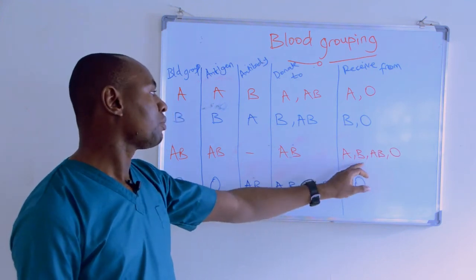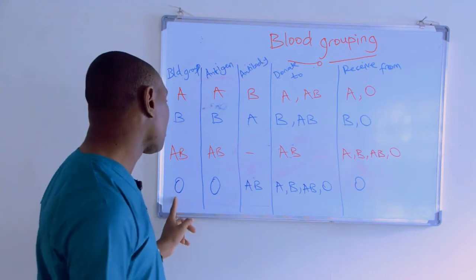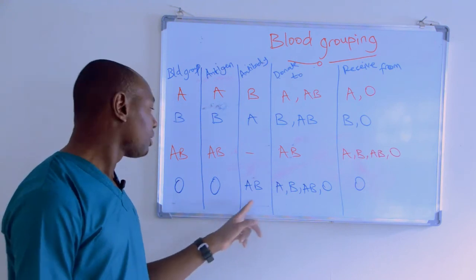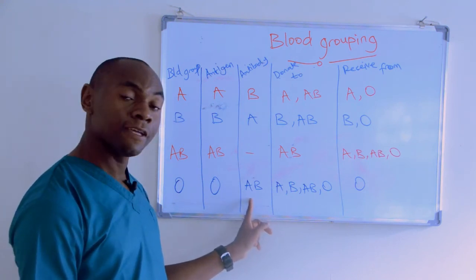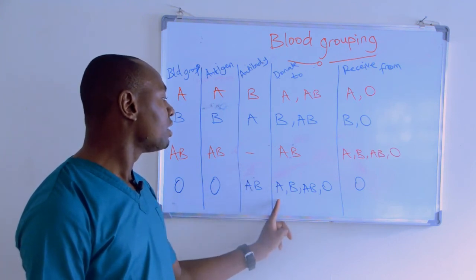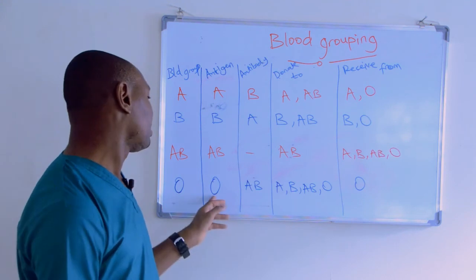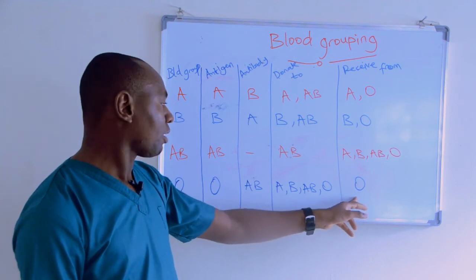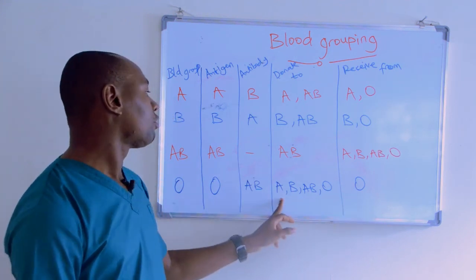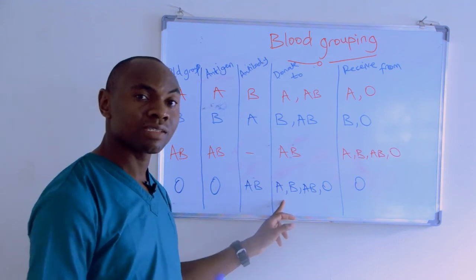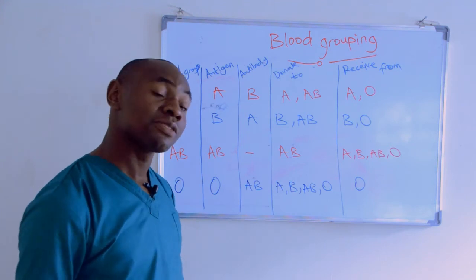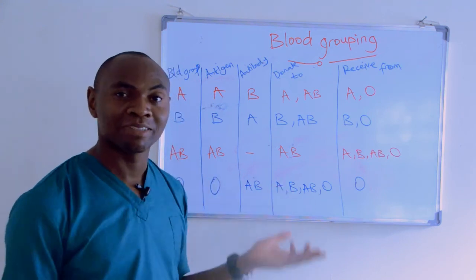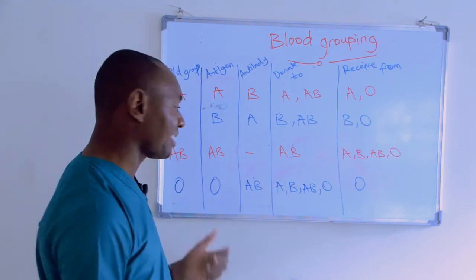For blood group O, there is no antigen, so they have both antibody A and antibody B. They donate blood to everybody because there is no antigen to cause a reaction. However, they only receive blood from fellow blood group O. The O group is therefore termed universal donor because they can give blood to anybody.